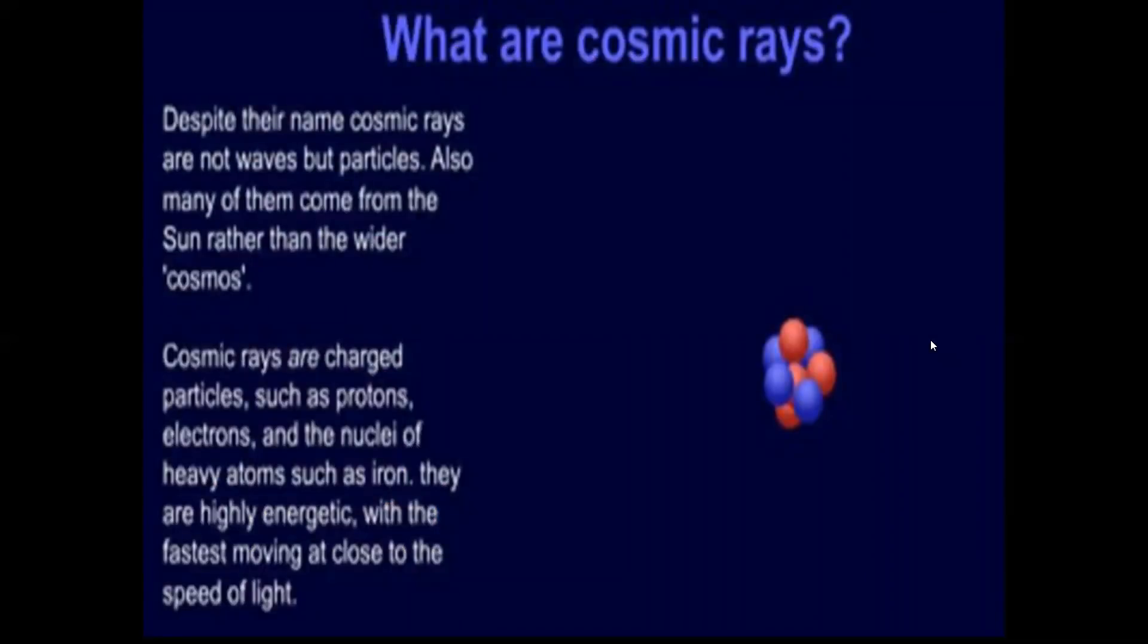Now, they are not rays. Despite the name cosmic rays, they're not waves, but particles. Dr. Albers has shown us this. Also, many of them come from the sun rather than the cosmos. And that's another misconception. A lot of the cosmic rays are coming from the sun. I'm going to show you why. Cosmic rays are charged particles, such as protons, electrons, and the nuclei of heavy atoms, such as iron. They are highly energetic, with the fastest moving at close to the speed of light.